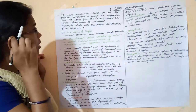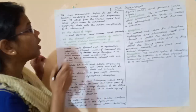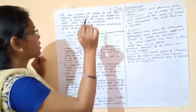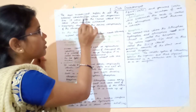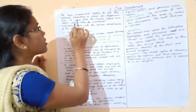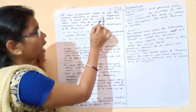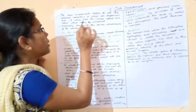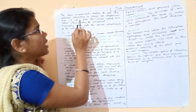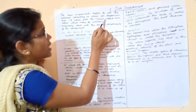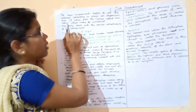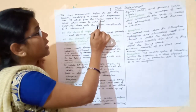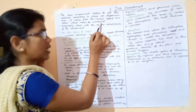Now let's look at the word 'environment.' The term environment refers to all the external conditions in which an organism lives. It comes from the French word 'environner,' which means 'to surround.'